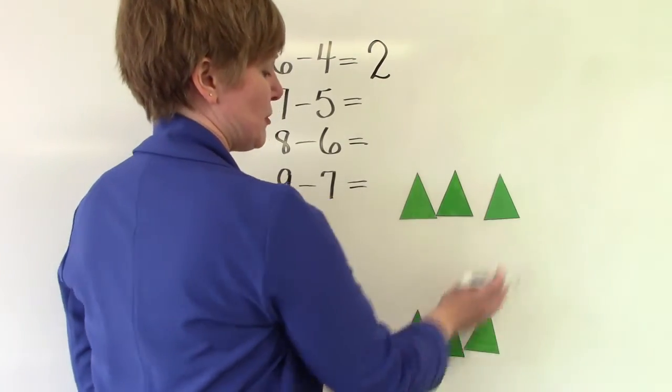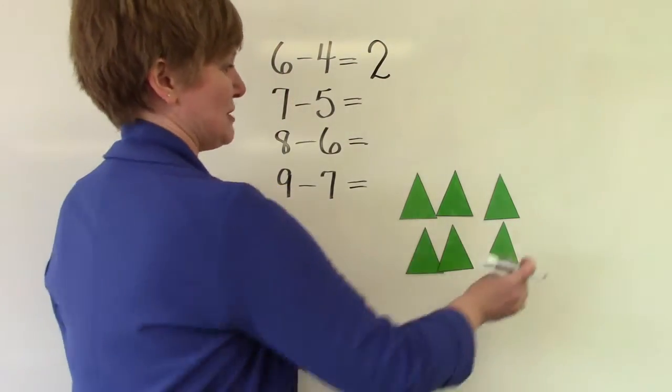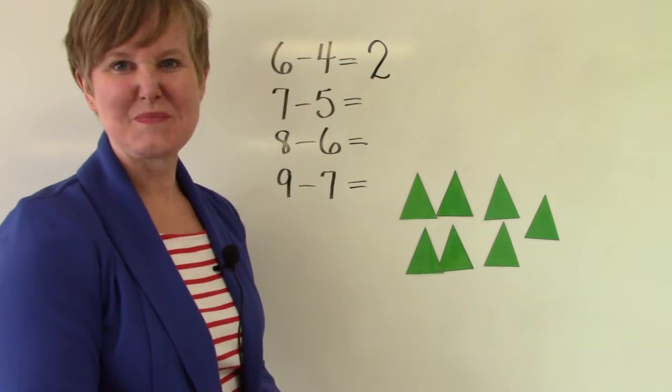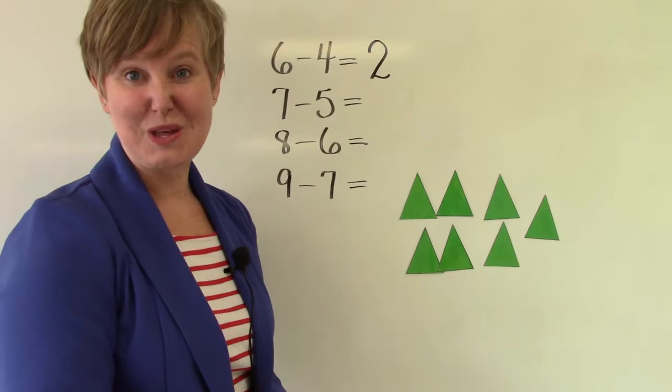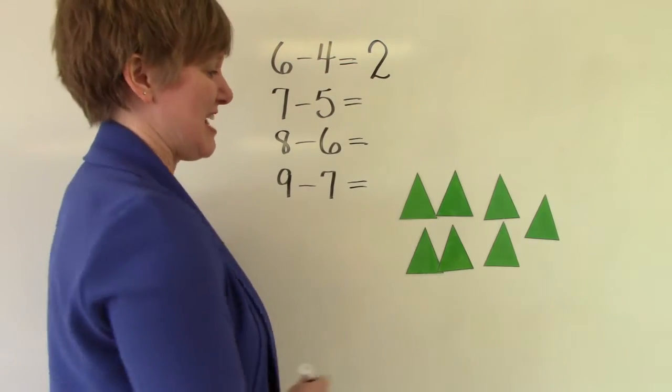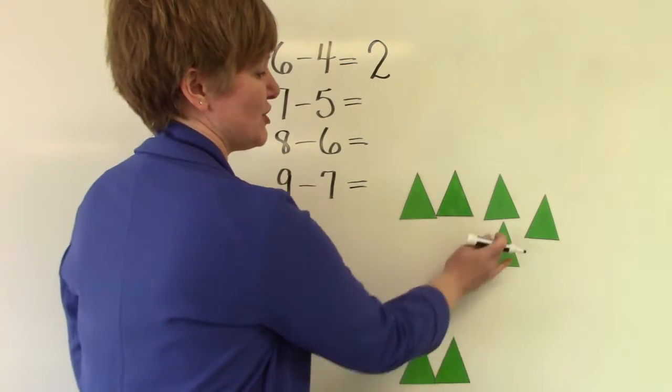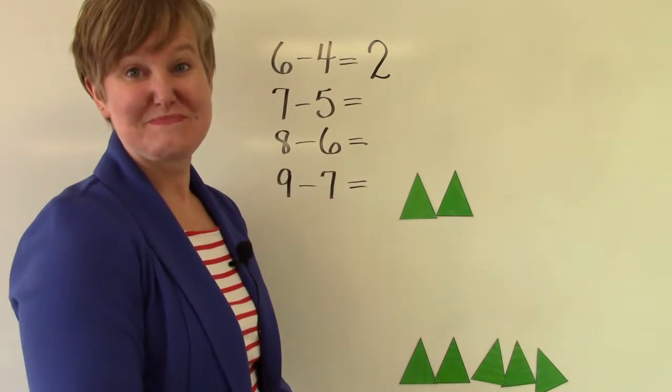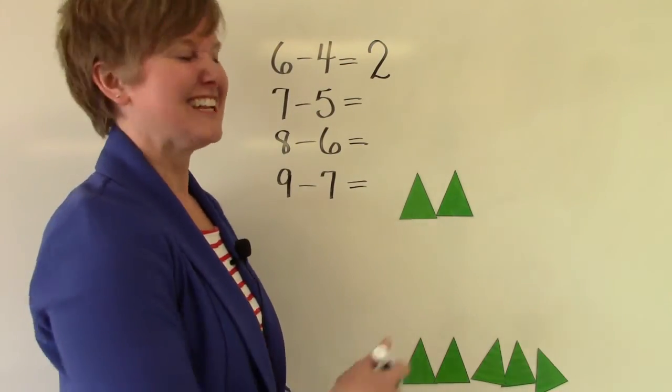Well I'm going to put these back because now we're going to be doing seven take away five. I now have seven triangles on the board. Seven and we're going to take away one, two, three, four, five. How many are left? It's two.